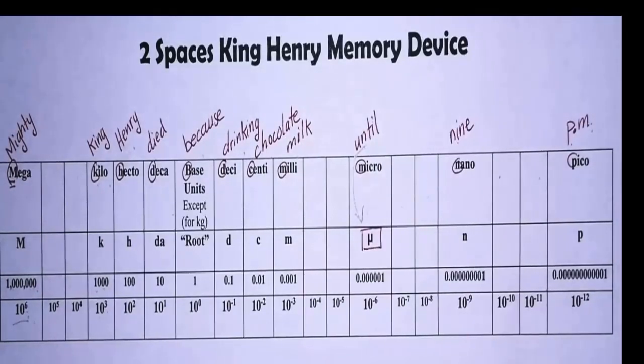Now how does that help you memorize the values of the prefixes? If you memorize the statement and you memorize any values for any of the prefixes, you can determine the rest of the values. Because look at the order: we have six, five, four, three, two, one, zero.